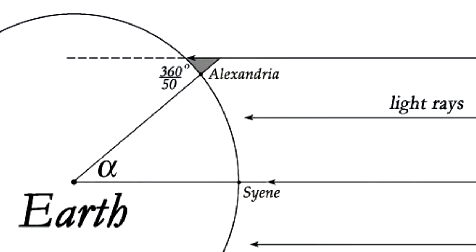After reaching this conclusion, Eratosthenes then famously factored the length of the two shadows with his assumed distance to the sun and recorded a measurement of the globe-earth circumference close to what heliocentrist astronomers still use today.